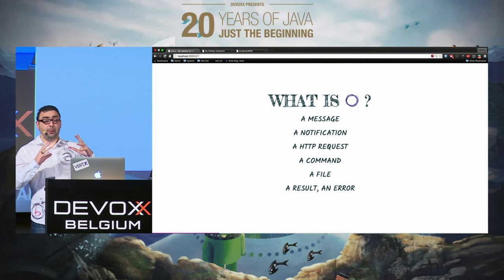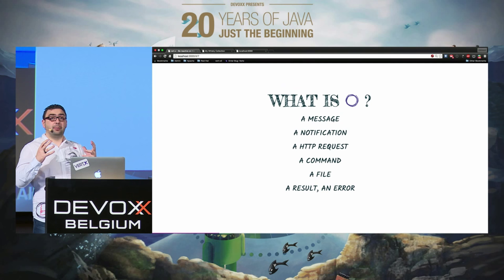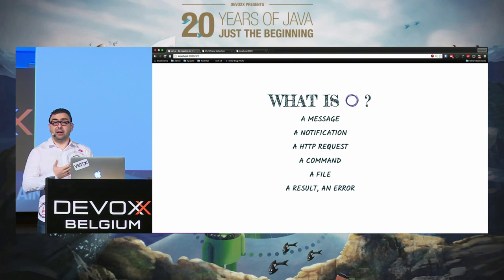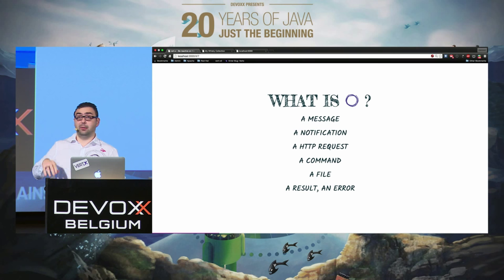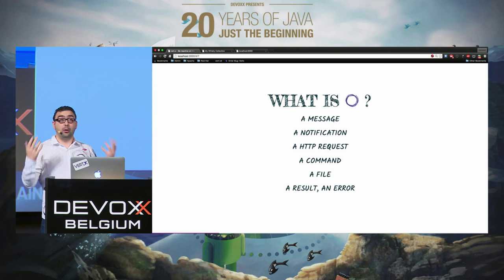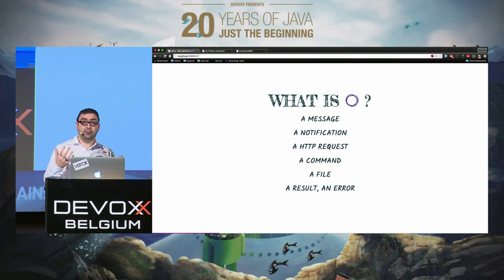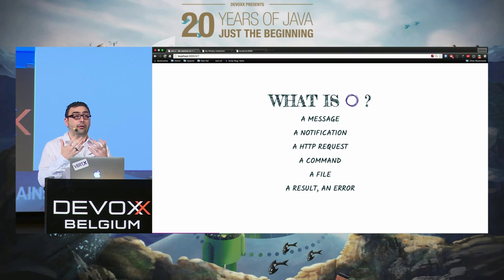What are events in Vert.x? An event is just an object. It can be a message, a string, a notification, an HTTP request, a TCP request, a command — for example, if you interact with Redis — a file result, an error. Even though it's called an event, it can be any of your objects.